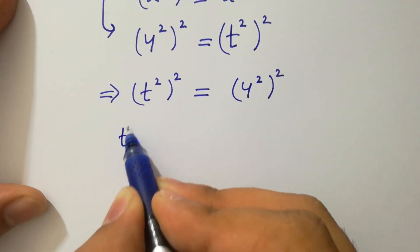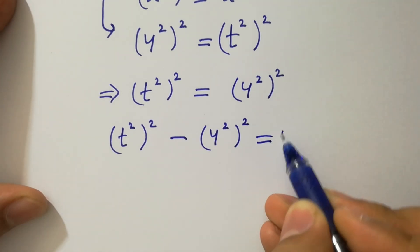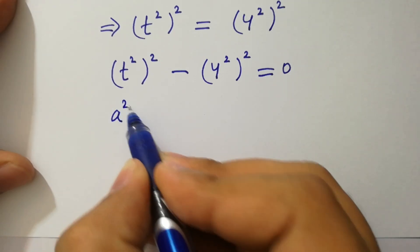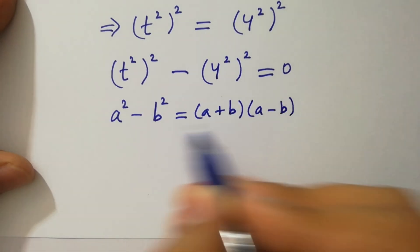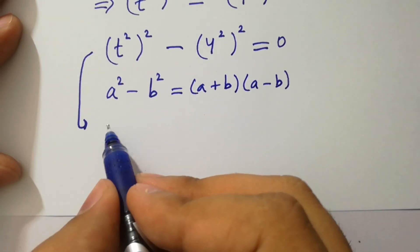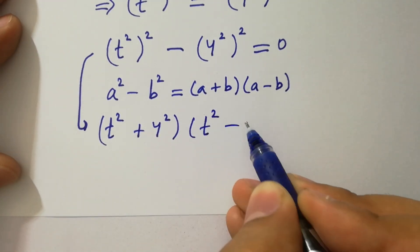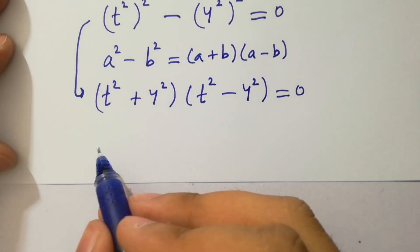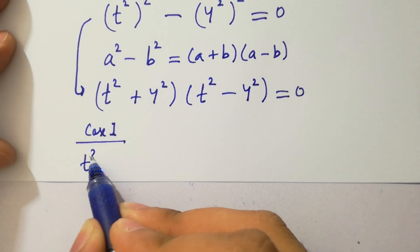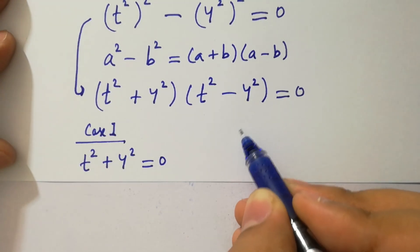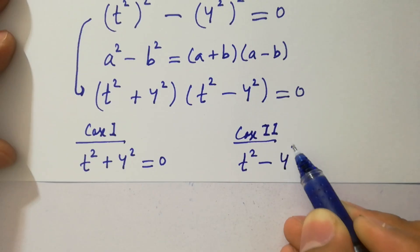This can be written as t square to the whole power 2 minus 4 square to the whole power 2 equals 0. Using the formula a square minus b square equals a plus b times a minus b, we get t square plus 4 square times t square minus 4 square equals 0. So we have two cases.